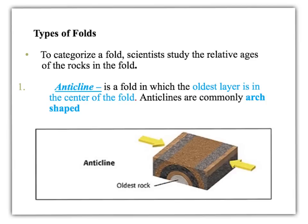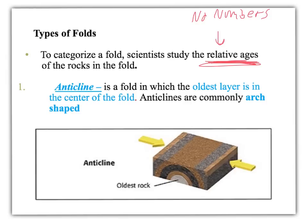There are three types of folds, and each type tells us something different about the age of the rocks inside. When we look at a fold, we look at the relative ages of rocks — which involves no numbers. We're just trying to figure out what rock is older and what rock is younger. It's like looking at high school — seniors are older than sophomores, sophomores are older than freshmen. Those are relative ages; we just know the order, not the exact number of years.